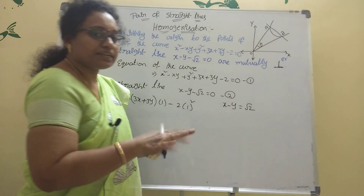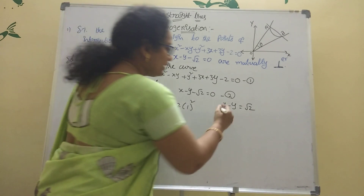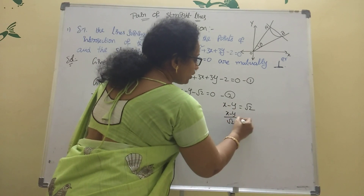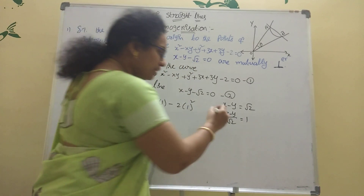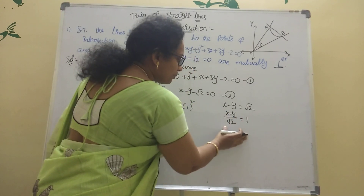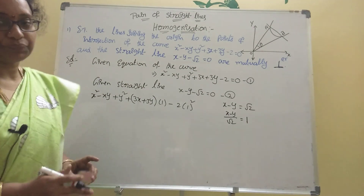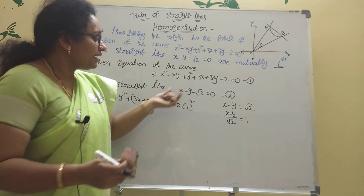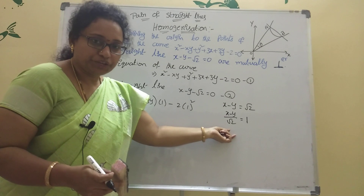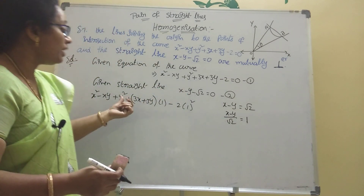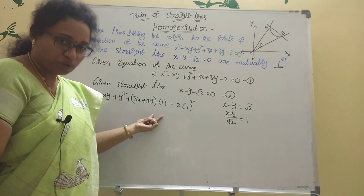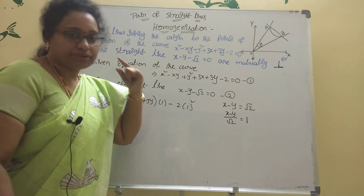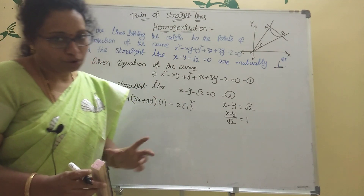Whatever number is there, that number should be divided on both sides. Then x minus y by root 2 equals 1. We need to apply this term from inside. That is the homogenizing procedure — wherever the line appears, we make it equal to 1 and substitute. The x and y coefficients go into 1, and the constant term becomes 1 squared. That is the procedure of homogenizing problems.